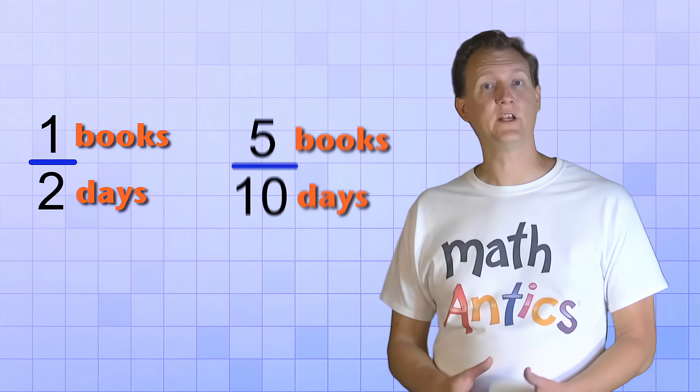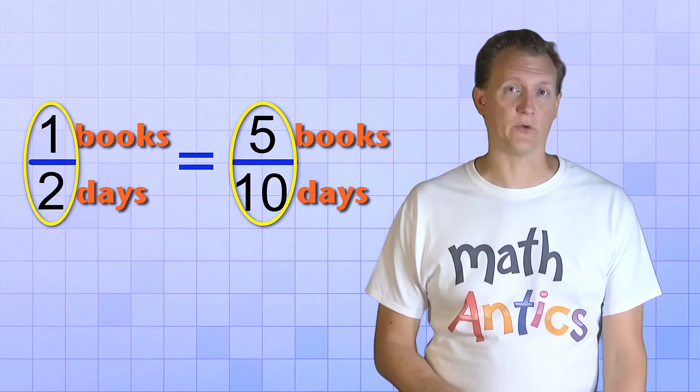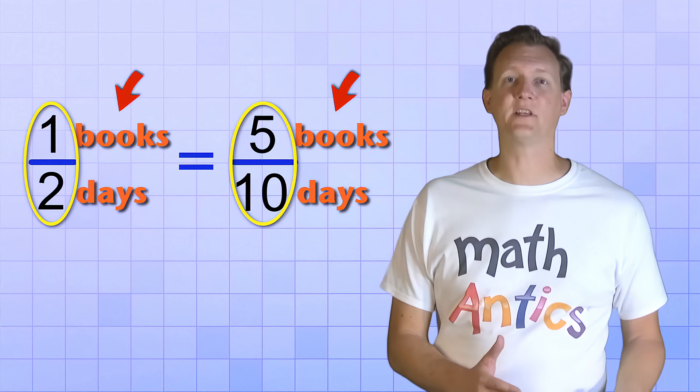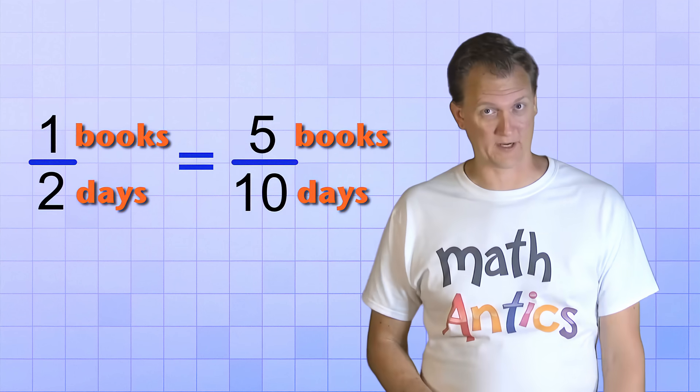And one thing that's really important to remember... In order for two ratios to be equivalent, they not only have to have the same value, they also have to have the same units. That is, they have to be representing the same thing on top and on bottom. Let me show you what I mean.